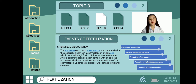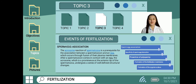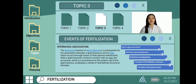The next topic is the events of fertilization. The first event is sperm-egg association. The spermatozoa's acrosome response is preconditioned by the sperm and egg combination caused by their plasma membranes fusing. When a sperm comes in contact with an egg, a series of well-defined structural changes occurs to the acrosome, which is prominent at the anterior of the sperm.